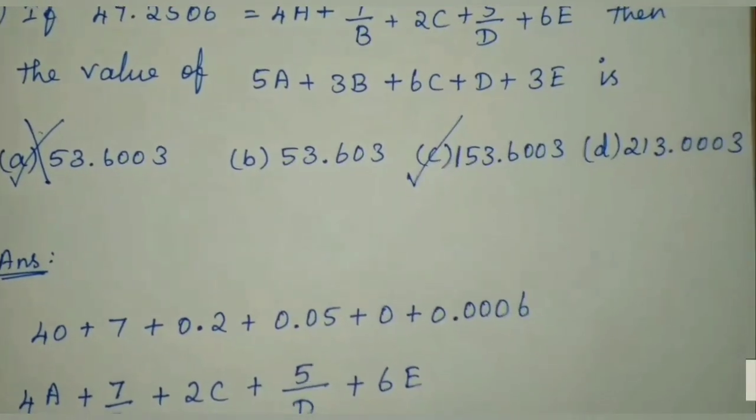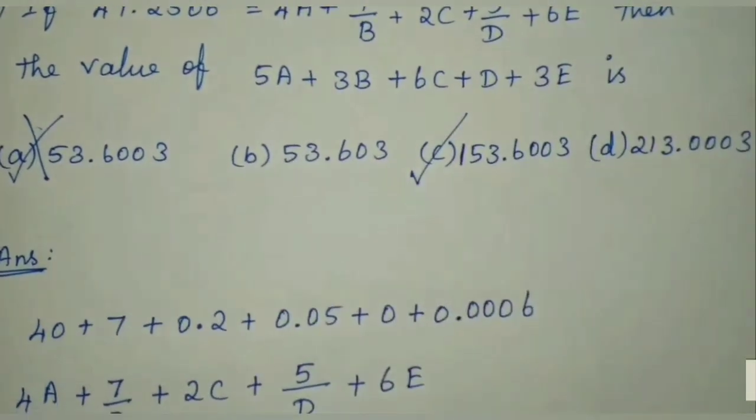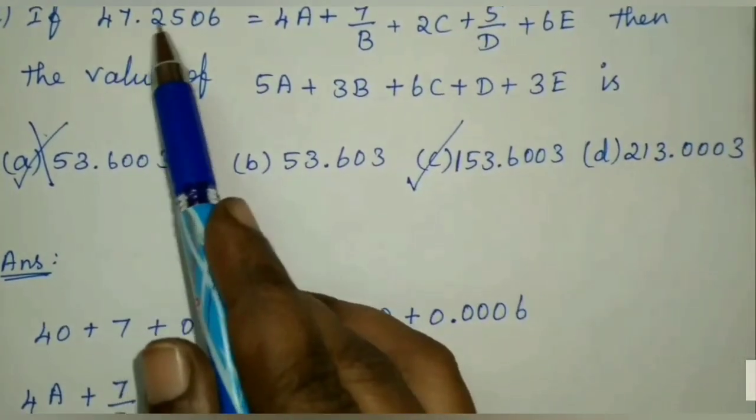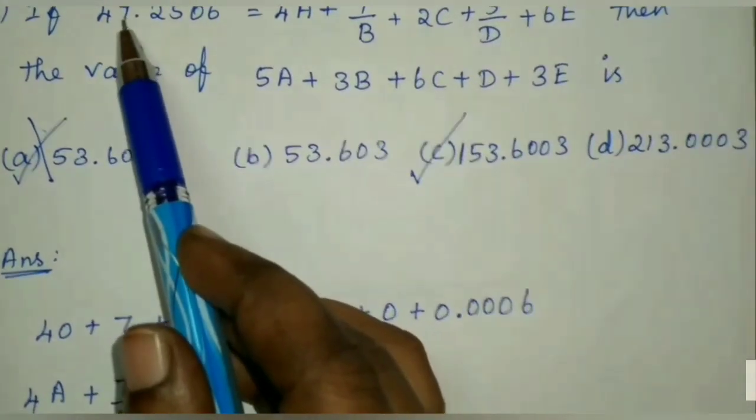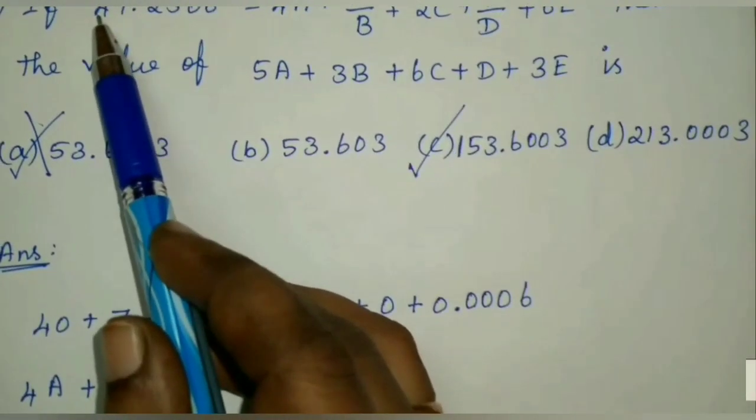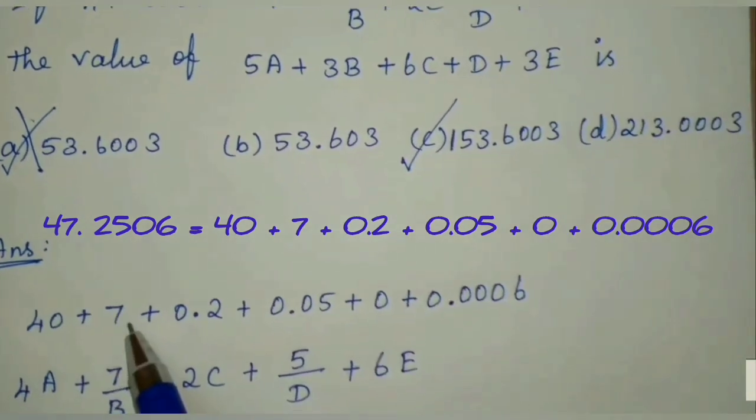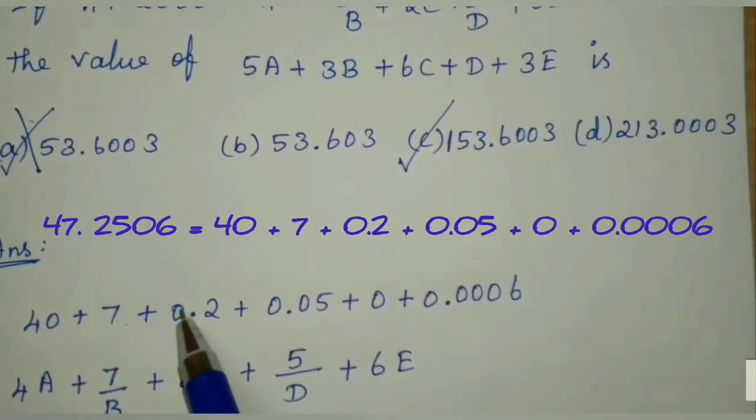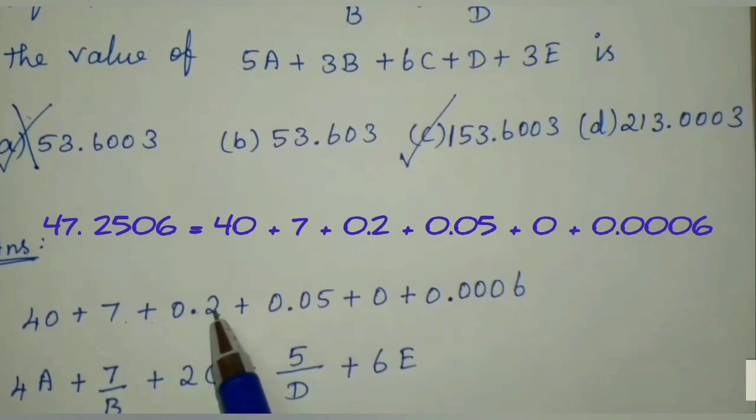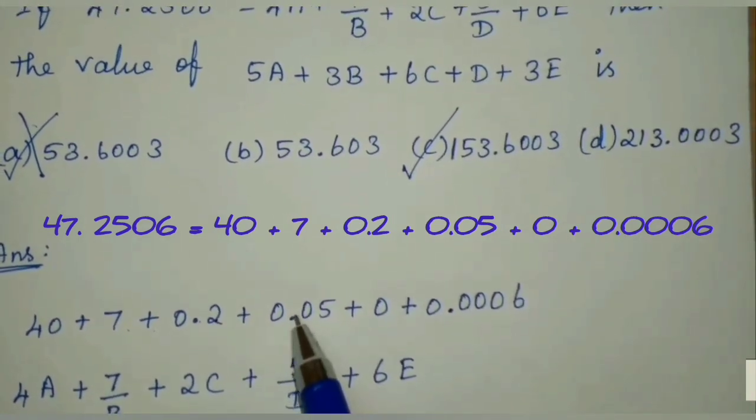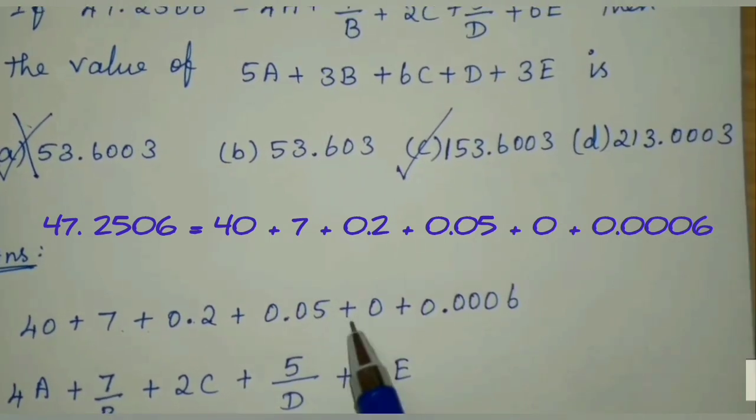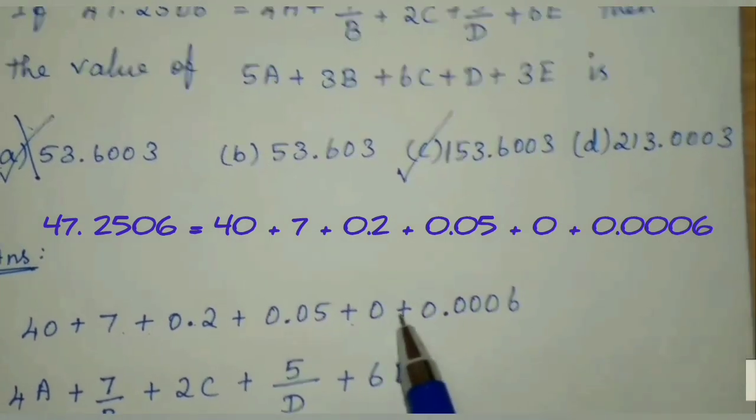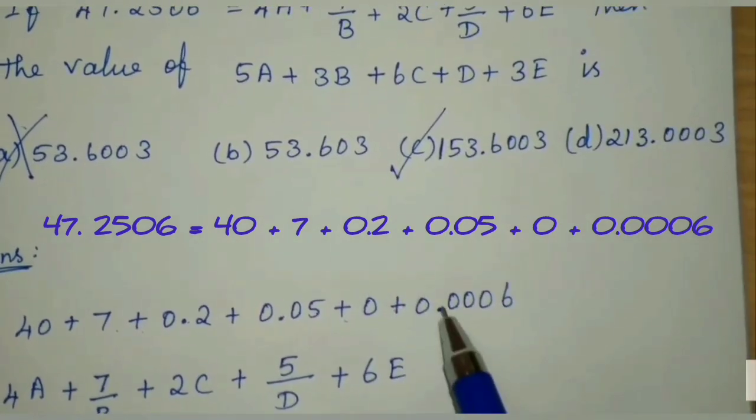First, 47.2506 will expand. How to expand? 47, so 40 plus 7 we know. So 40 plus 7 plus decimal value 0.2. Next decimal value is 0.05. Third one is 0, so write a zero. Then last one is 0.0006.